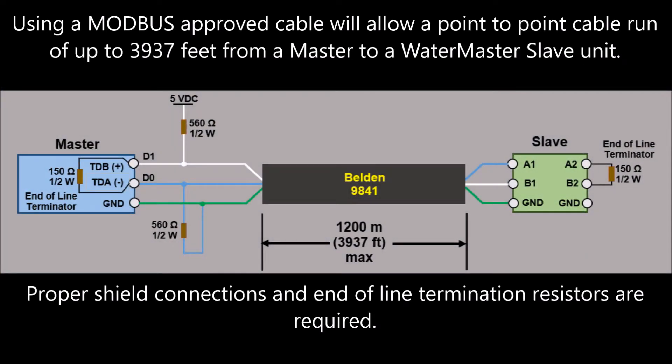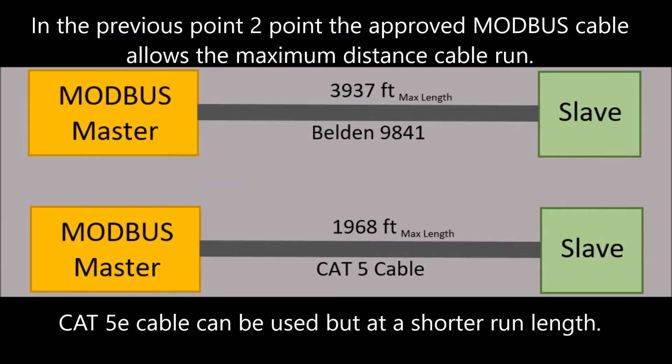Using a Modbus-approved cable will allow a point-to-point cable run of up to 3,937 feet from a master to a Watermaster slave unit. Proper shield connections and end-of-line termination resistors are required. The approved Modbus cable allows the maximum distance cable run, while CAT-5E cable can be used but at a shorter run length.